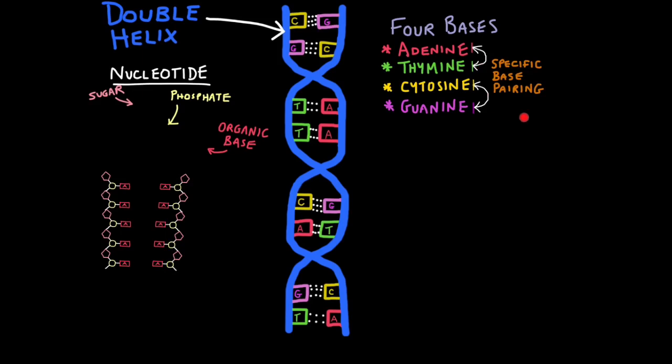This is something we call specific base pairing, and if you want to replicate DNA, or if you want to make proteins from the DNA code, this is essential. Joining the base pairs are weak hydrogen bonds. There are three between cytosine and guanine, and two between thymine and adenine. The weak part is actually important. This enables DNA to unzip very easily and reattach very easily.